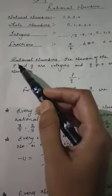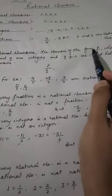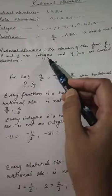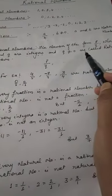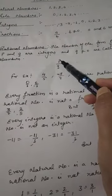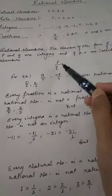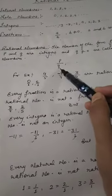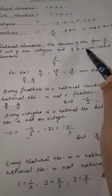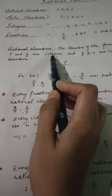Next is rational numbers. A number of the form p/q, where p and q are integers and q is not equal to 0, is called a rational number. Like fractions, rational numbers are expressed in the form p/q, and the denominator will never be equal to 0. But here, p and q are integers.